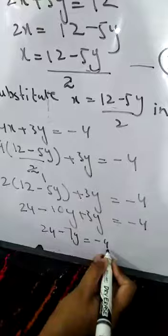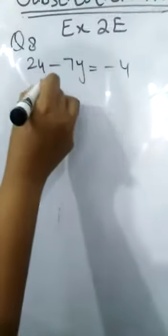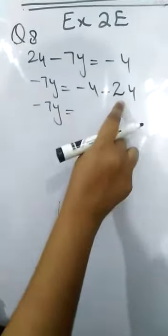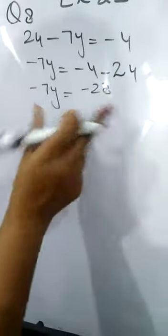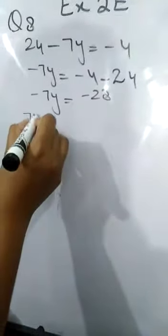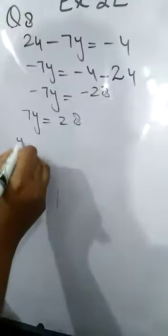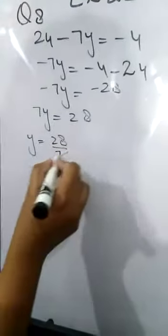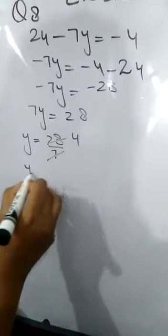24 equals minus 24. 24 would be shifted there. Minus 4, 24 would be negative. Minus 4 minus 24 is minus 28. Multiply this equation by minus, we will get this one. We will solve this. Divide by 7. Y is equal to 4.